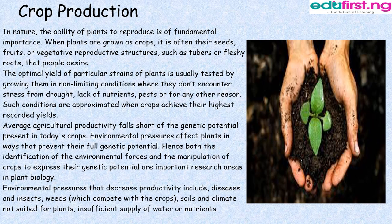Crop Production. In nature, the ability of plants to reproduce is of fundamental importance. When plants are grown as crops, it is often their seeds, fruits, or vegetative reproductive structures such as tubers or fleshy roots that people desire. The optimal yield of particular strains of plants is usually tested by growing them in non-limiting conditions where they don't encounter stress from drought, lack of nutrients, pests, or any other reason. Such conditions are approximated when crops achieve their highest recorded yield.